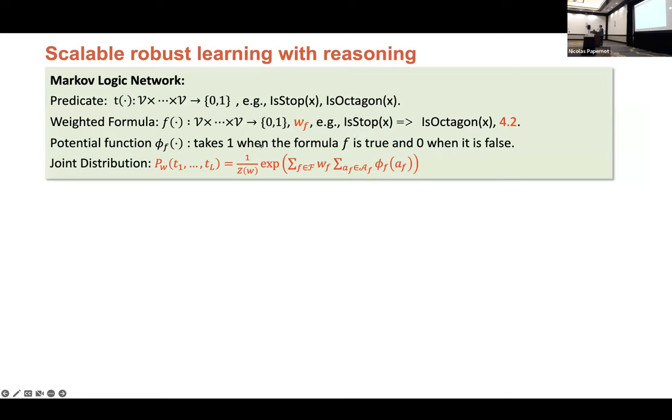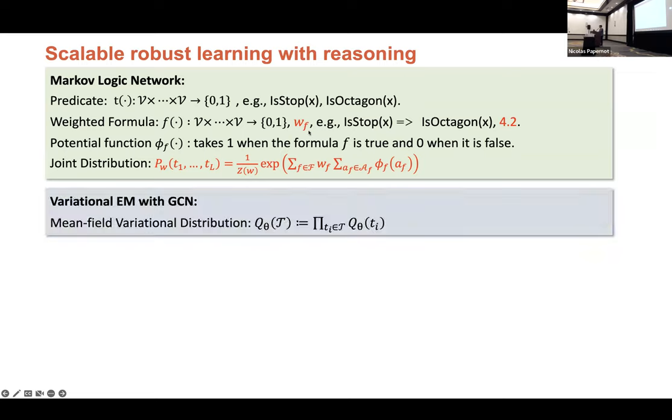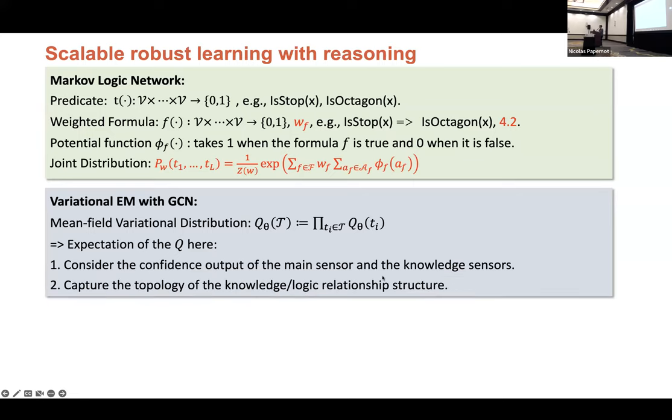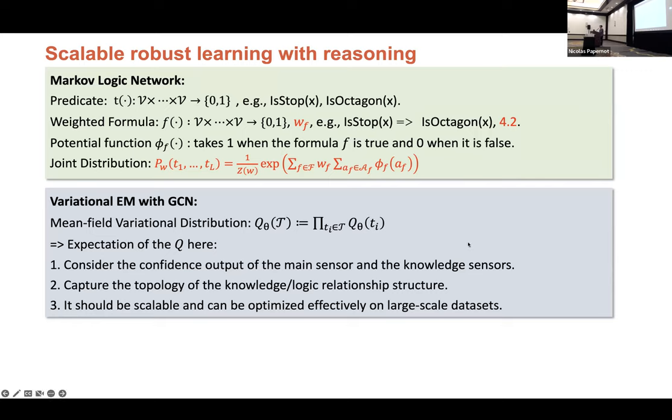So let's do some recap. The main difficulty is this. And another question is that we also need to learn the weight for each formula. So we propose an algorithm with variational EM with GCN. First, we will approximate this joint distribution with a mean-field variational distribution, but the different thing is that we hope this approximate family have some properties. First, we hope it can consider the confidence output of the main sensor and the knowledge sensors. And the second thing is we also hope it can capture some topology of the logical relation rules. And the third thing is that it should be scalable and it can be optimized efficiently on large-scale datasets. So we wanted to use GCN as a family of the approximation functions.